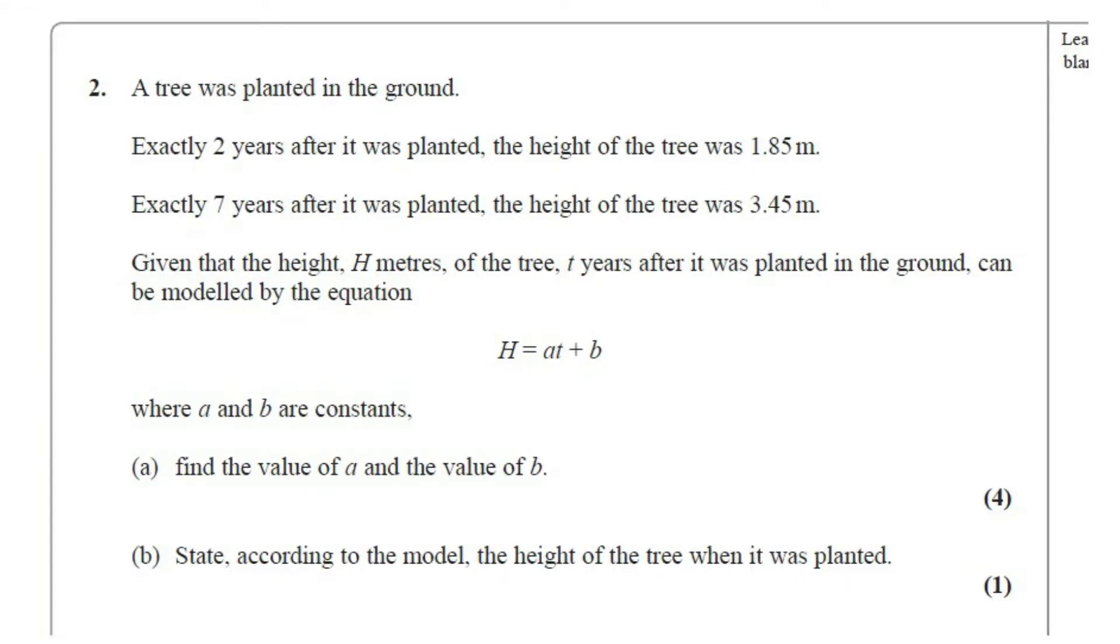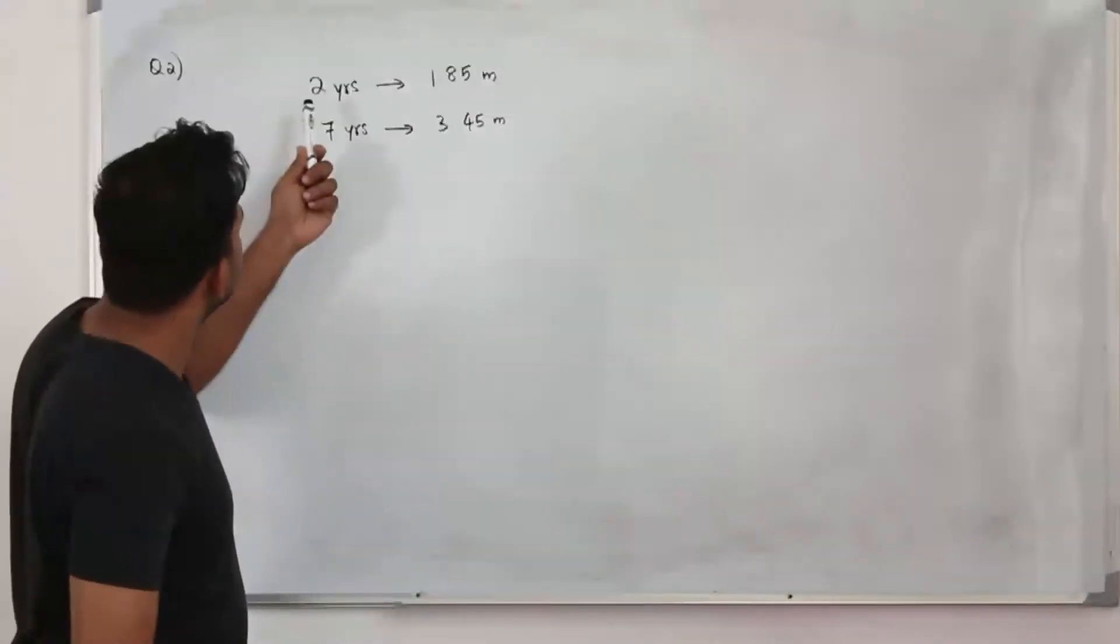Given that the height H meters of the tree t years after it was planted in the ground can be modeled by the equation H equals at plus b, where a and b are constants. There are two parts: part a, find the value of a and b which has four marks, and part b, state according to the model the height of the tree when it was planted. This question has one mark.